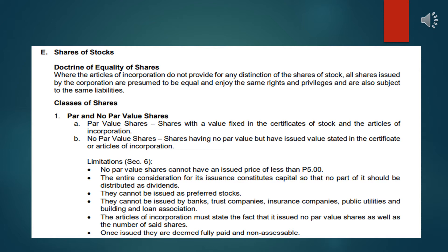We have different classes of shares. The first one is par value and no par value of shares. Par value shares are shares with a value fixed in the certificate of stock and in the articles of incorporation. No par value shares are the complete opposite — these are shares having no par value but have an issued value stated in the certificate.